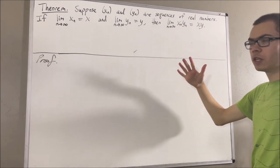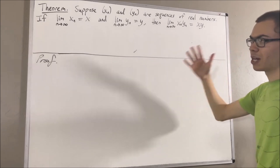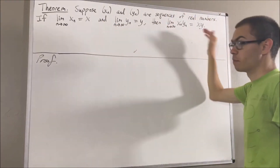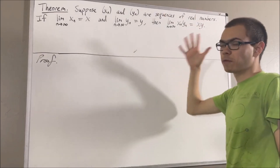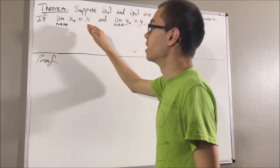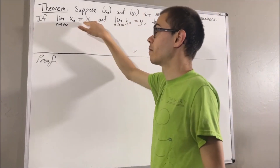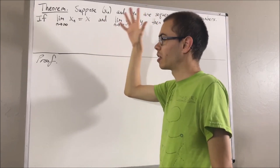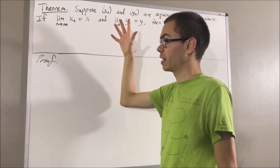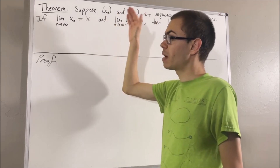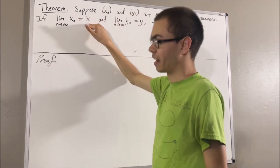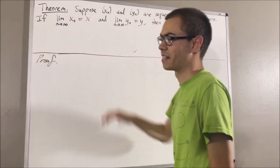Before we get into the proof, let's first remind ourselves what these three things mean. By definition of the limit of a sequence, to say that xn converges to x means for every epsilon greater than zero, there exists a positive integer k such that for all positive integers n greater than or equal to k, the absolute value of xn minus x is less than epsilon.